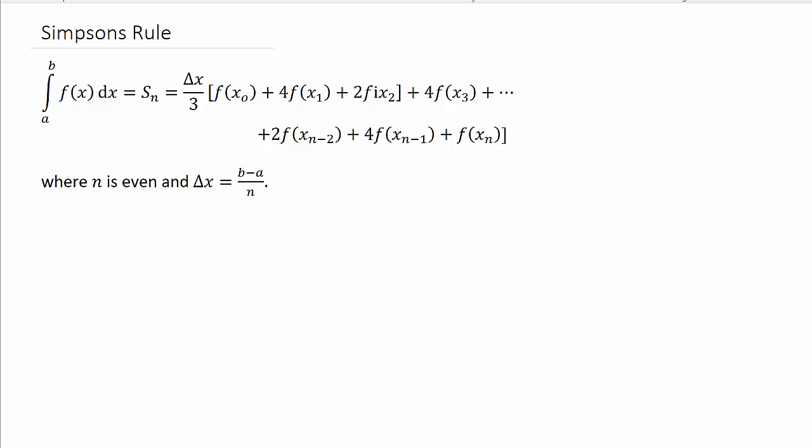Alright, so let's look at Simpson's Rule. We've got the integral of f(x)dx from a to b equals S_n. So it's Δx/3 times [f(x_0) + 4f(x_1) + 2f(x_2) + 4f(x_3) + ... + f(x_n)]. Notice the first and last one is not multiplied by any number. But after the first one, you're multiplied by a 4.